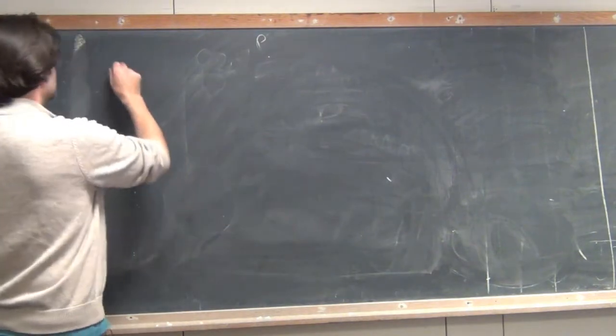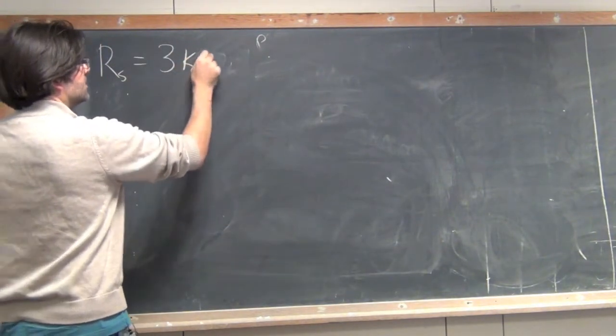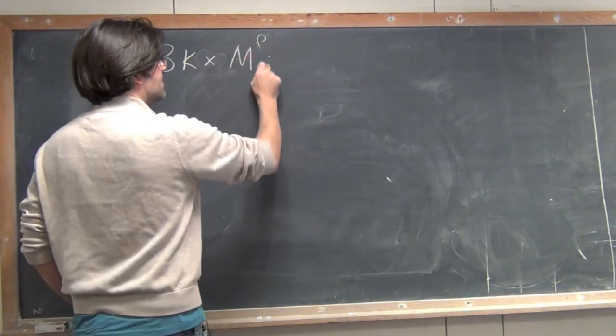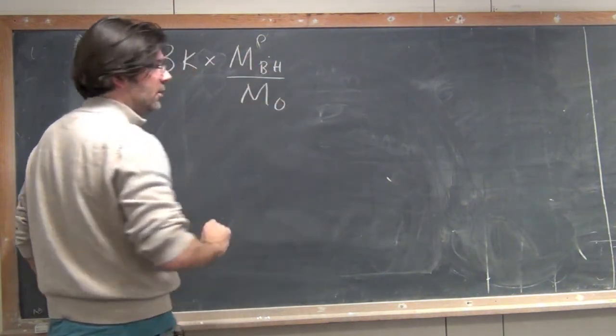So, remember, the Schwarzschild radius is 3 kilometers times the mass of the black hole divided by the mass of the Sun. So we want to ask this question.